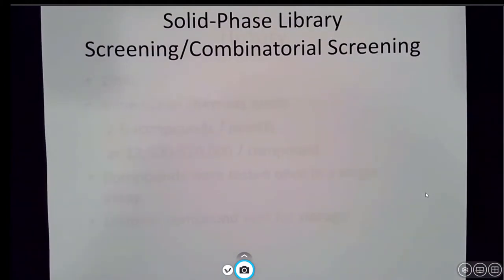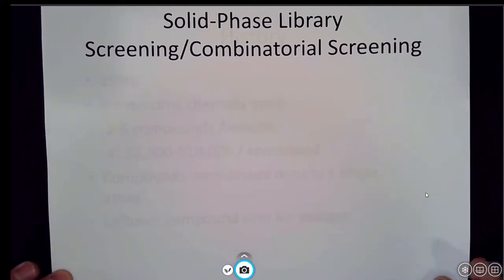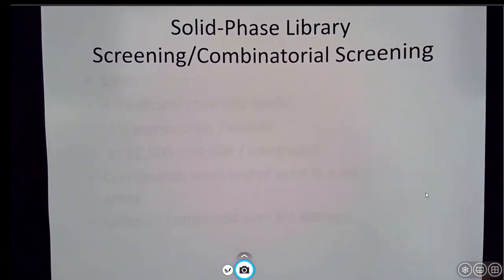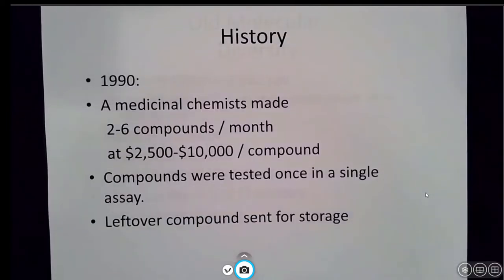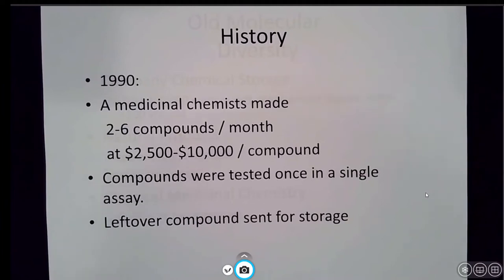Before we talk about that, I want to bring you back to an era from around the 1980s and 1990s and talk about classic medicinal chemistry. Medicinal chemists typically would work on individual compounds and they would make maybe two to six compounds a month. These would cost, depending on the chemicals, reagents, and the salary of the chemists, quite expensive - around $2,500 to $10,000 per compound. Compounds were then tested once or twice in a single assay and any leftover compounds were sent for storage.